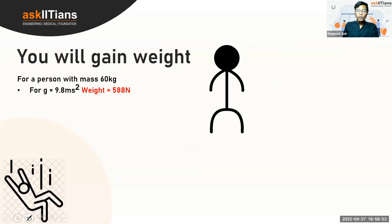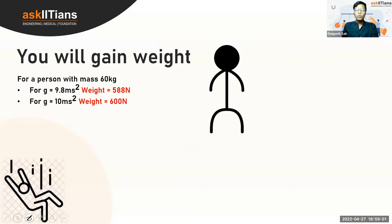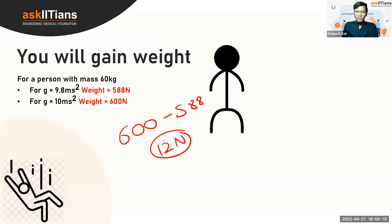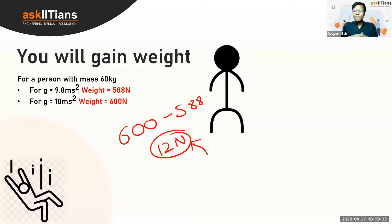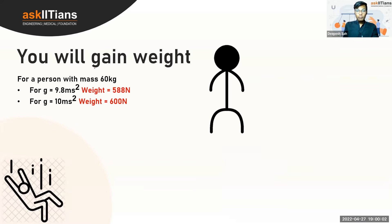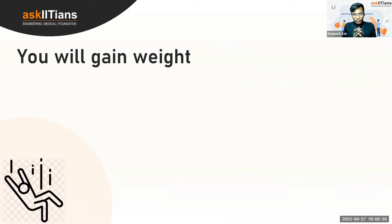But if I change the value of g from 9.8 to 10, the weight of the body becomes 600 Newtons. The difference between the two is 600 minus 588, which equals 12 Newtons. You might think this is a very small and simple difference, and you'd be right — for a person, changing g from 9.8 to 10 does not make a very big difference.